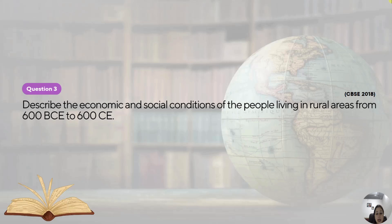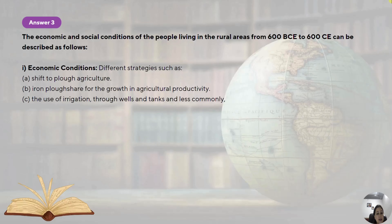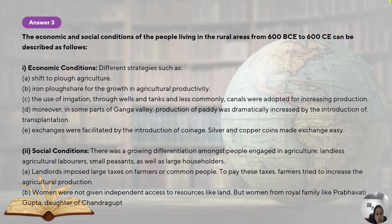Moving on to question number three: describe the economic and social conditions of people living in rural areas from 600 BCE to 600 CE. For the economic condition, agriculture was the mainstay of the economy, and most of the revenue was coming from farming. There was a shift to plough agriculture as the first major change, and the ploughshare was used for growth in agricultural productivity.